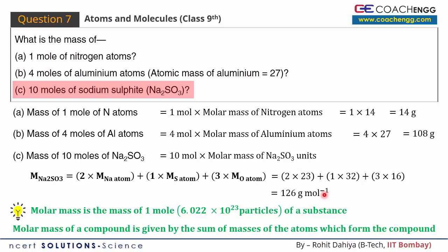That is, one mole Na2SO3 will weigh 126 grams, so 10 moles' weight will be 10 into 126 which is equal to 1260 grams. So we have solved all three parts. These were the respective answers of all the three parts.